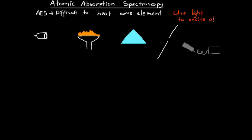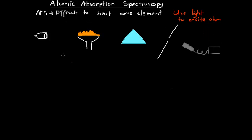A photon must carry energy exactly equivalent to the difference in energy between electron shells. For example, if we have an electron in the first shell, a photon can be absorbed only if it carries energy exactly equal to the difference between the first and second shells. If such a photon is absorbed, the electron moves out to the second shell. Only very specific frequencies of light can excite an atom.